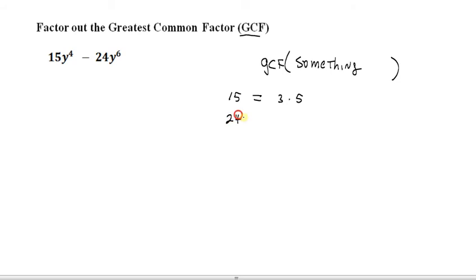And then 24 would be 3 times 8, but 8 can be written as 4 times 2. So what's common to these two things? Well, 3 is the only factor that's common to both of those terms. So that tells us the greatest common factor will include the number 3.